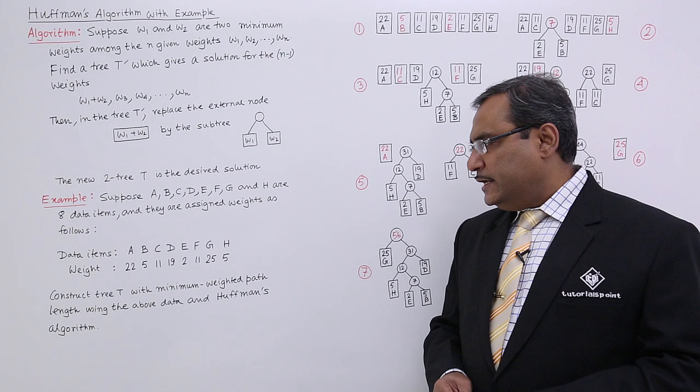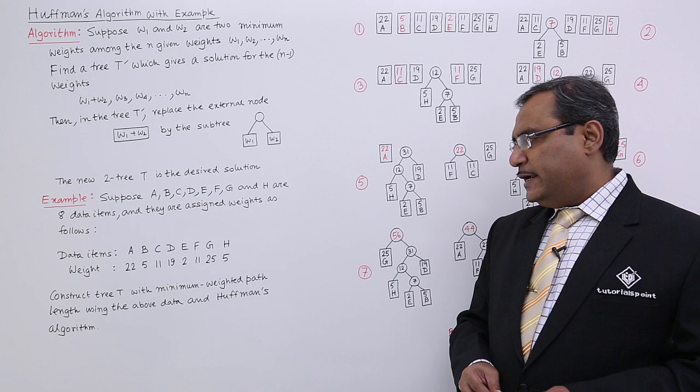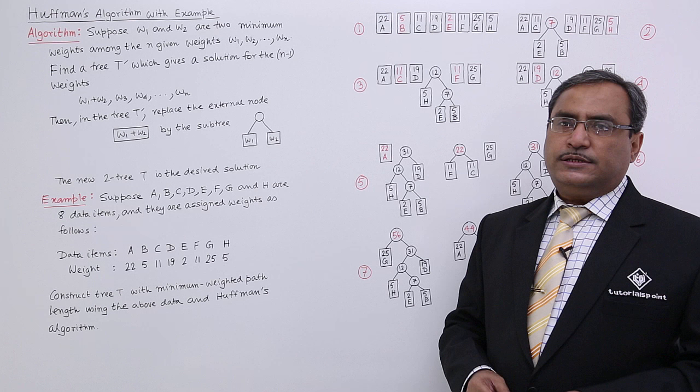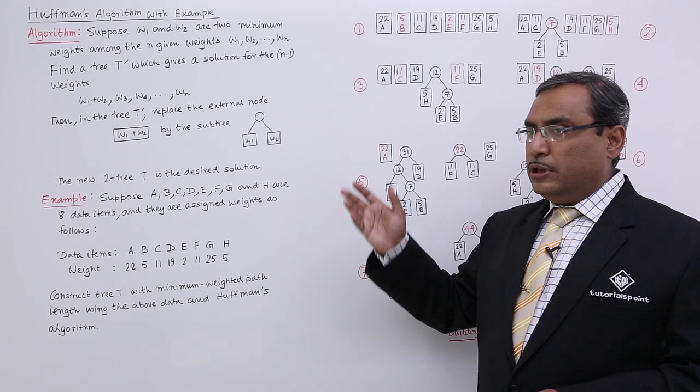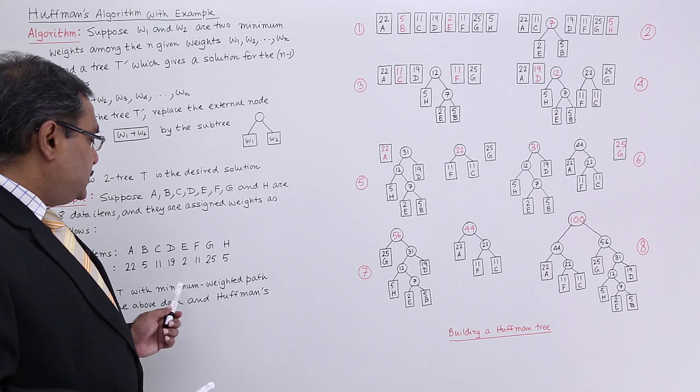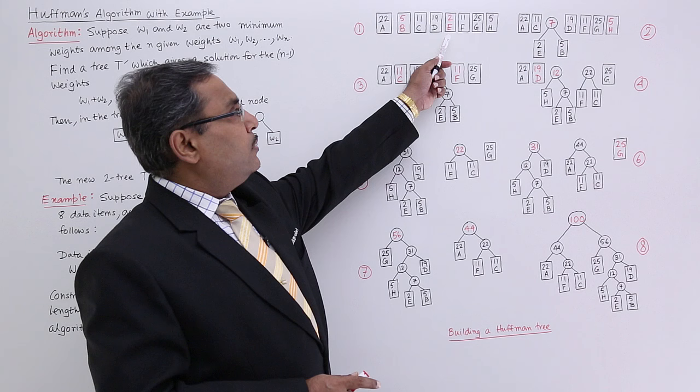Construct tree T with minimum weighted path length using the above data and the Huffman's algorithm. This particular algorithm will be applied to generate the external two tree as a solution and there this particular algorithm will be used in a recursive way and the tree will be constructed in the bottom up approach. Let us go for the solution. This is my respective weightage and data we have written. Now, I shall have to select the minimum two nodes having the minimum weights.